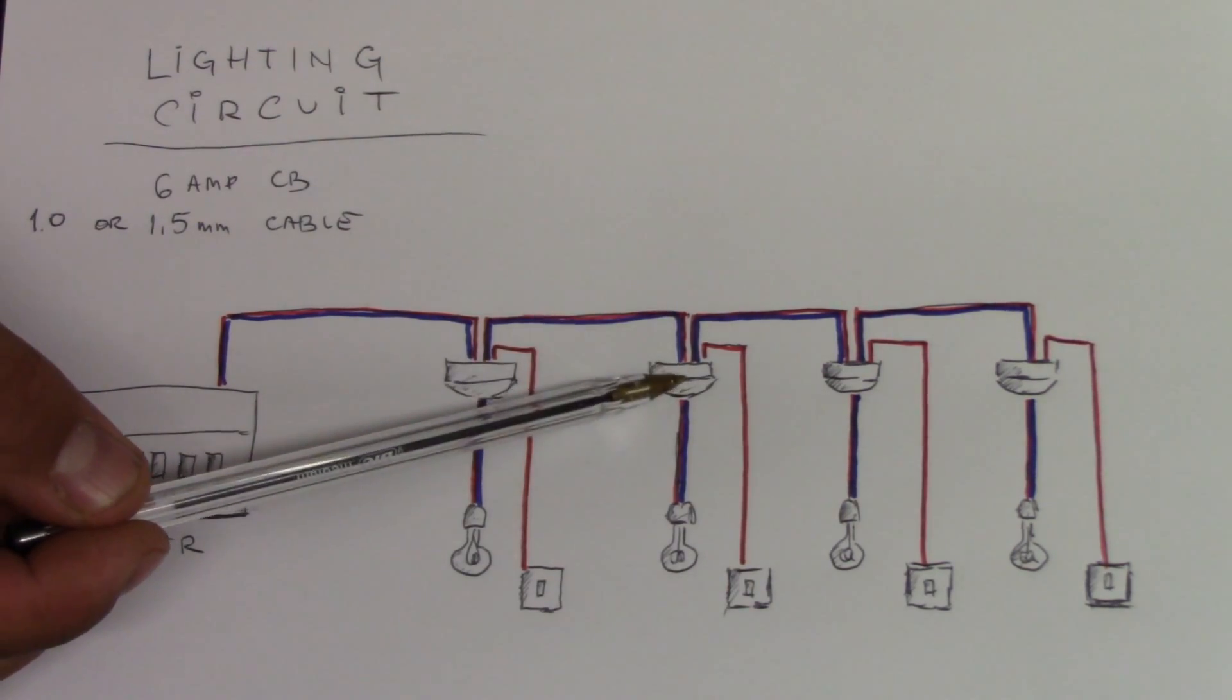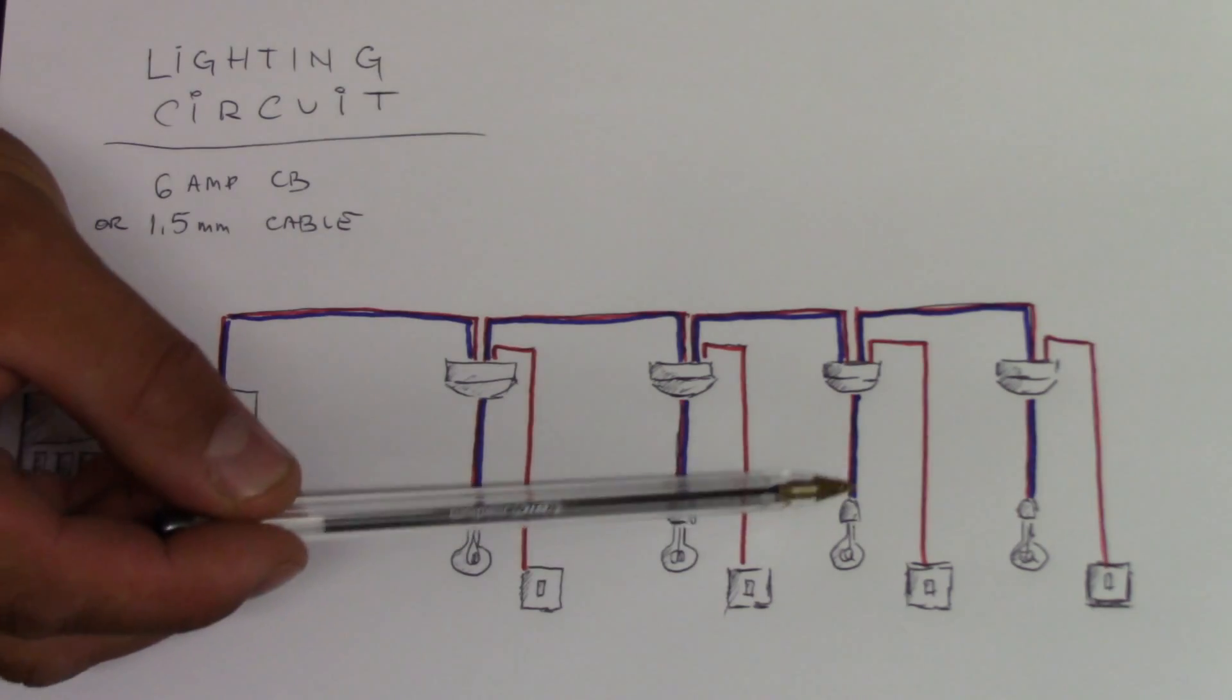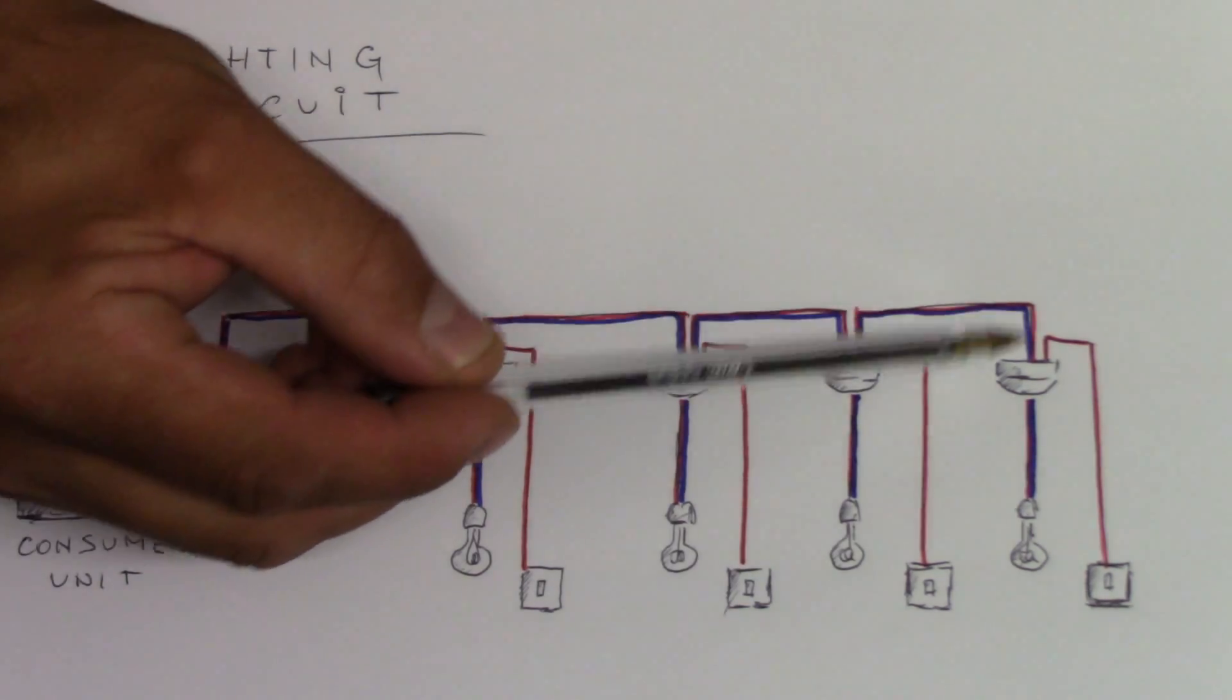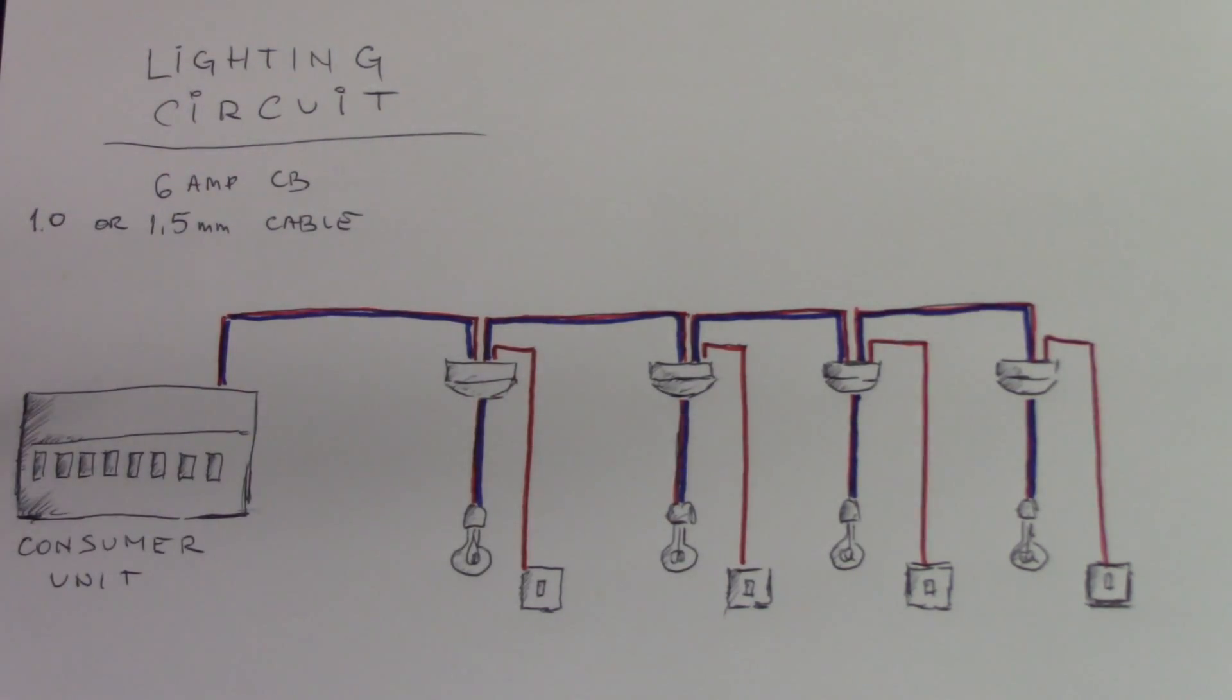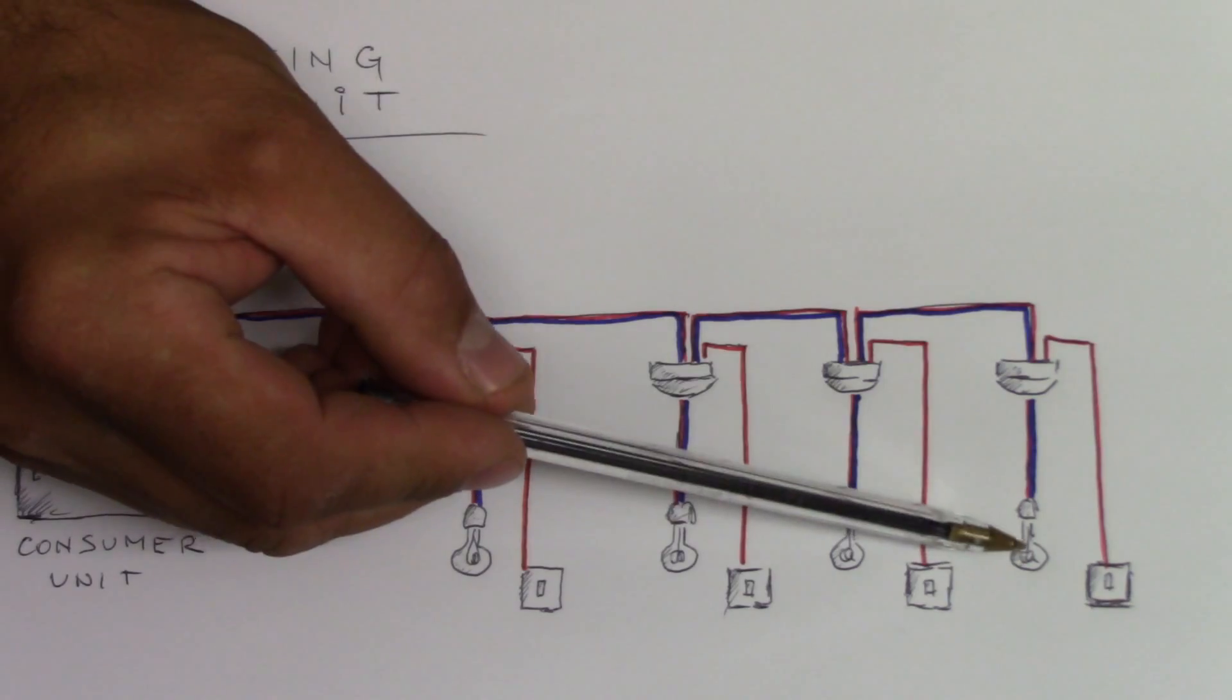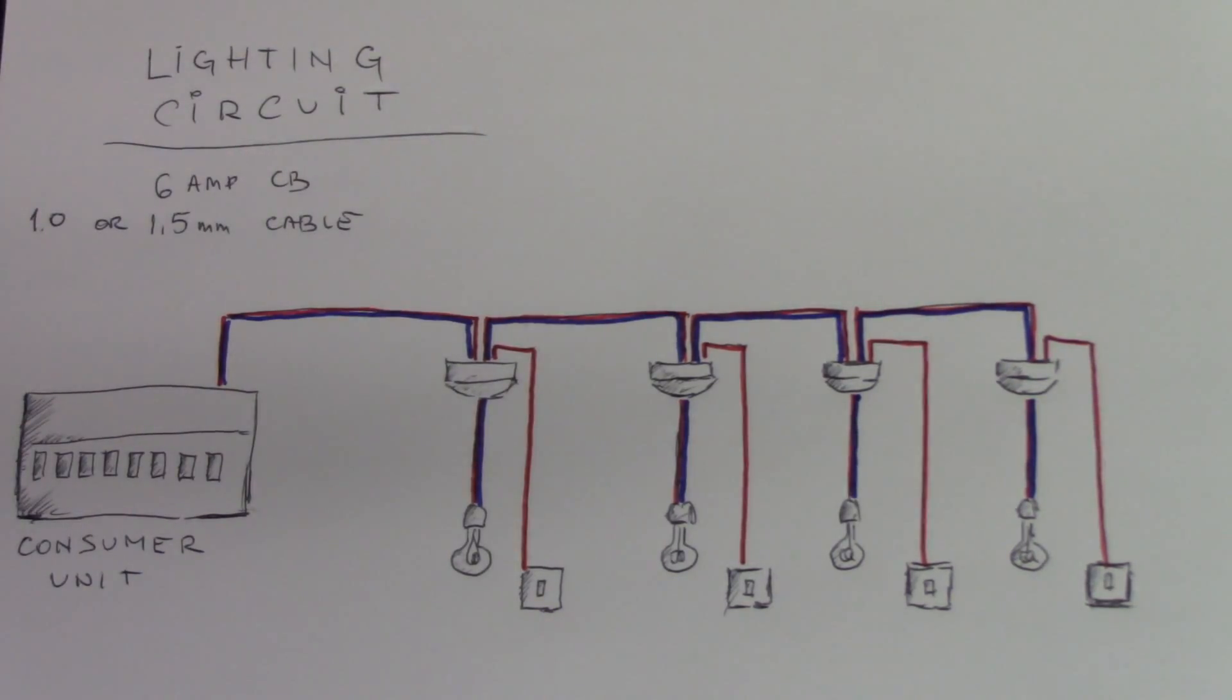From the second room it goes to another room, the same situation, and up to the end where it finishes at the last point of the circuit. The whole circuit is protected by a 6 amp circuit breaker. The cable is 1.0 or 1.5 millimeter twin and earth cable. It depends on the length of the whole circuit.